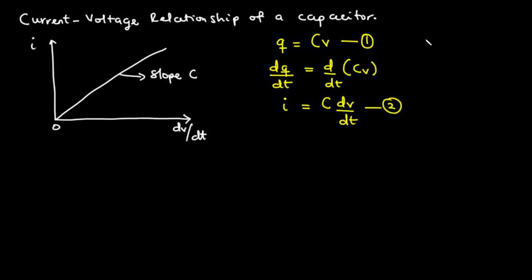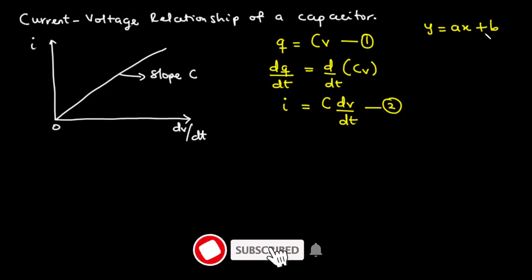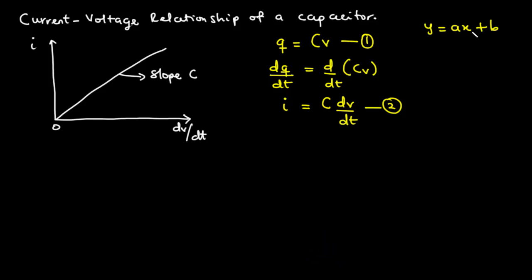Comparing this equation to the equation of a straight line, y = ax + b, we see that y corresponds to i, x corresponds to dV/dt, and the gradient a is equal to C, the capacitance. The constant b is equal to zero because there is no constant term in our equation.